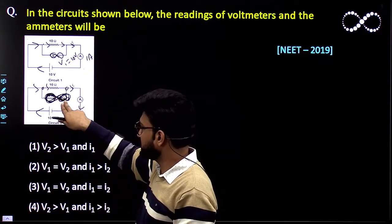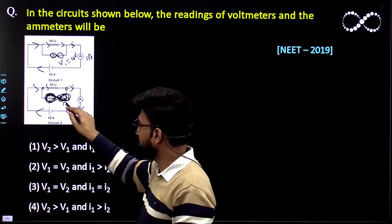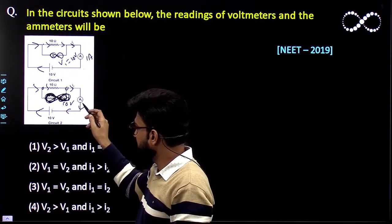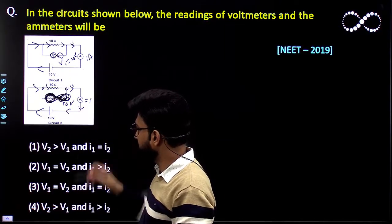So the potential difference across this V2 would also be 10 volt and this A2 would also be 1 ampere.